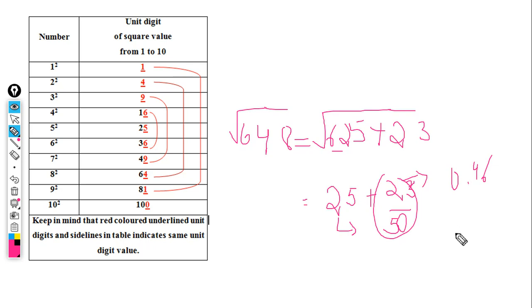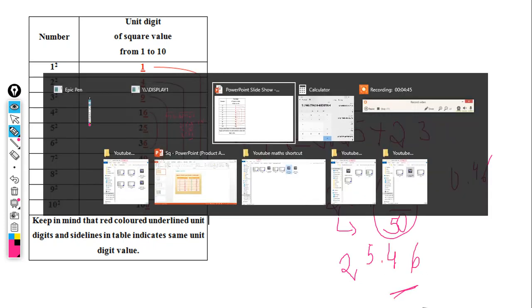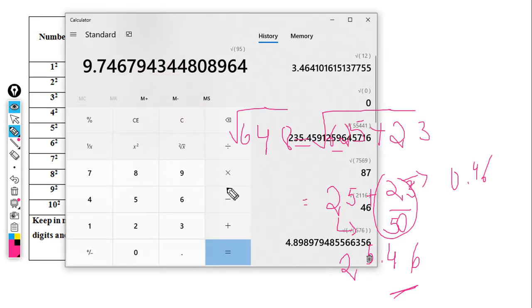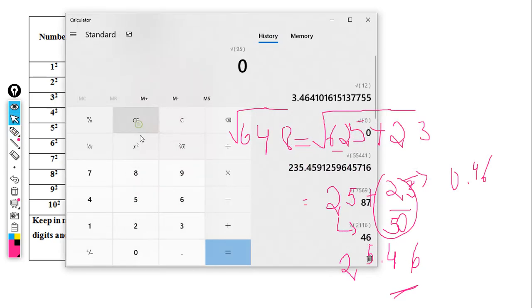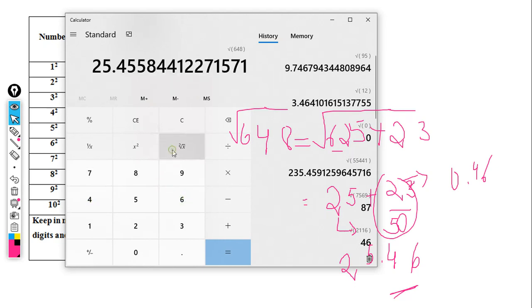Using the fraction method shortcut, we get 23 by 50, which is approximately 0.46. So the answer is 25 plus 0.46, which equals 25.46. Let me check with a calculator.